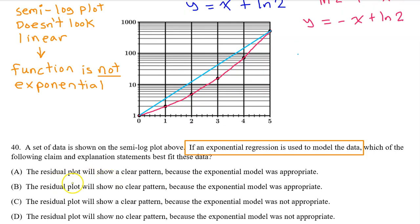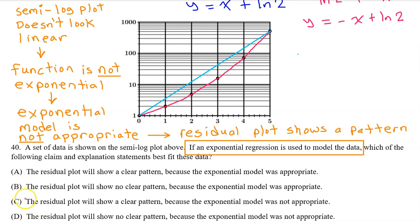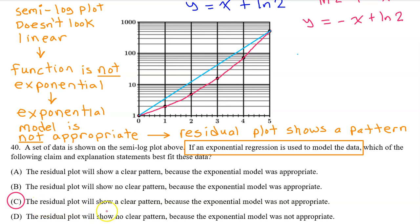I'm noticing that the answer choices are all about whether or not an exponential model was appropriate and what the residual plot will look like. But if the function is not exponential, then an exponential regression model is not appropriate. We have learned that when your regression model is not appropriate, the residual plot will show a clear pattern. That means the answer is C. The residual plot will show a clear pattern because the exponential model was not appropriate.